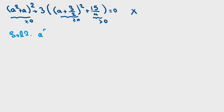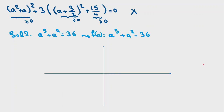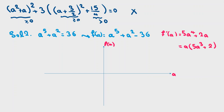For Solution 2, we define f(a) equals a to the 5 plus a squared minus 36, and we analyze this as a function. Drawing axes with f(a) on the vertical and a on the horizontal, we compute f prime of a equals 5a to the 4 plus 2a, which factors as a times (5a cubed plus 2). We know f(2) equals 0, and when a is positive, f prime is positive so f is increasing.